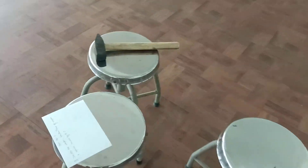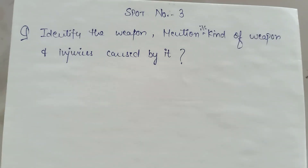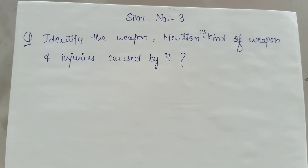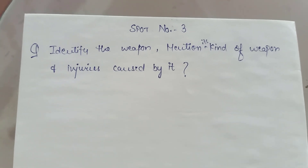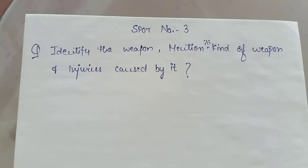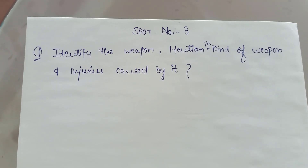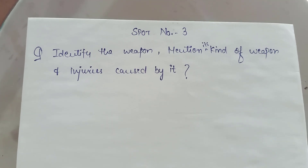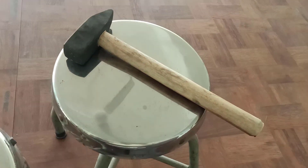This was the third spot. A hammer was kept. The question asked was: identify the weapon and mention the kind of weapon. The kind of weapon is a heavy blunt weapon. The injury caused by it — it can cause a depressed fracture over the skull, also called a signature fracture, plus it can cause lacerations.